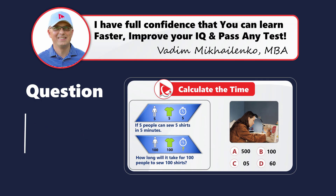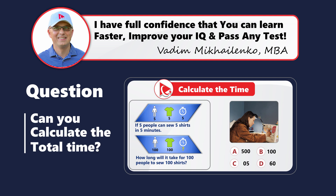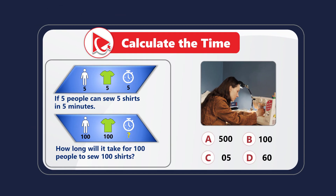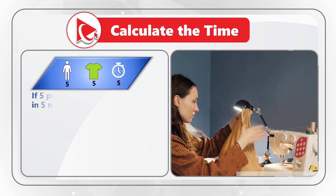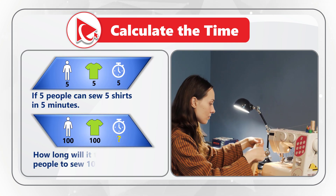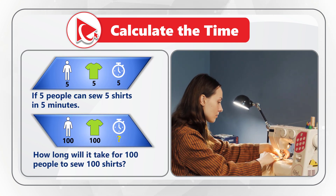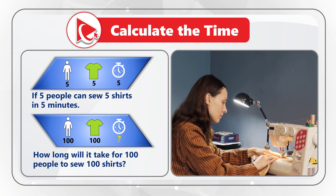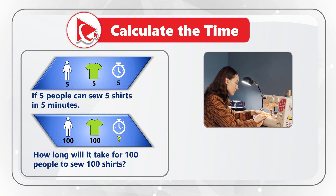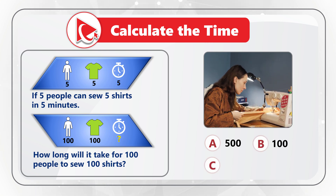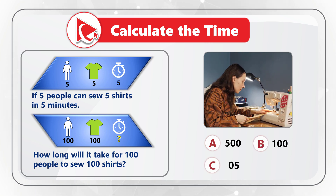Here's a very interesting question which might make you think, but hopefully you will get it very quickly. If five people can sew five shirts in five minutes, how long will it take for 100 people to sew 100 shirts? You're presented with four choices: choice A is 500 minutes, choice B is 100 minutes, choice C is 5 minutes, and choice D is 60 minutes.